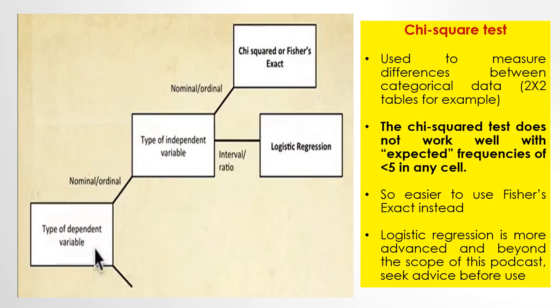We need to distinguish types of dependent variables. If the dependent variable is nominal or ordinal, we proceed to determine the type of independent variable. If the independent variable is also nominal or ordinal, we can use chi-square or Fisher's exact test. If it is interval or ratio, we use logistic regression. The chi-square test is used to assess differences between categorical data, like 2x2 tables, but does not work well with expected frequencies of less than 5 in any cell — in that case, use Fisher's exact instead. Logistic regression is more advanced.